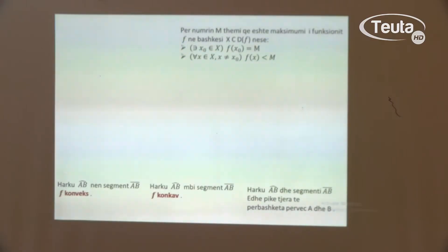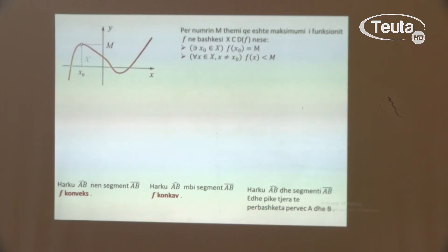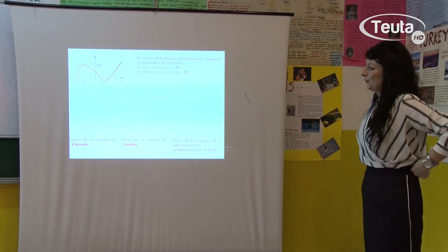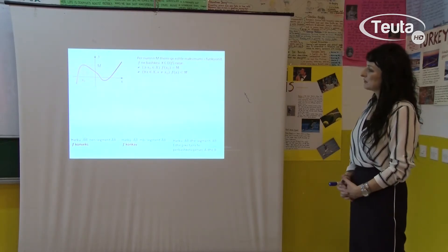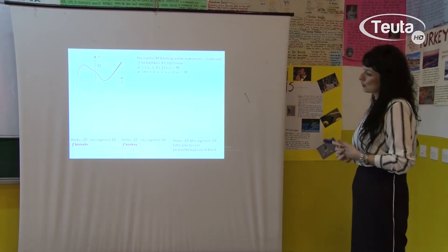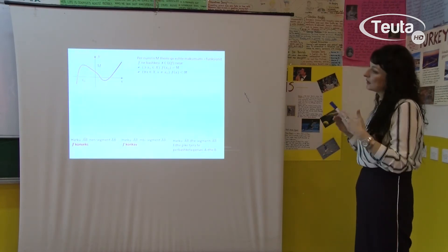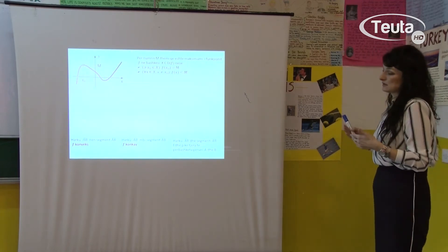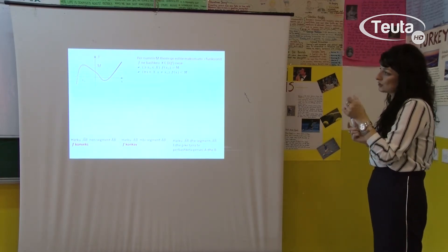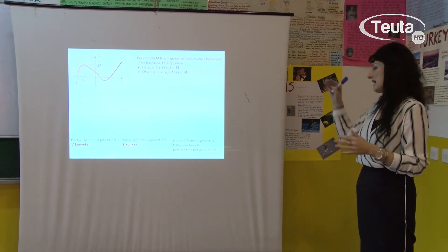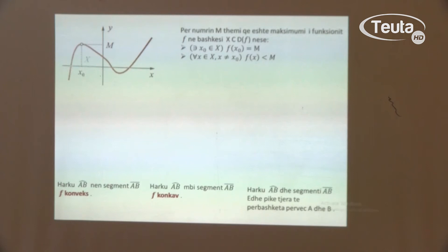Pika tjetër që do të shqyrtojmë është pika e maksimumit. Këtu kemi gjithashtu të paraqitur një grafik, dhe siç shohim, pika më e madhe për vlerën x₀ është pika maksimale në bashkësinë X të funksionit. Themi: për numrin m që është maksimumi i funksionit f në bashkësinë X, në qoftëse ekziston x₀ për të cilin arrihet m, dhe për çdo x nga bashkësia X, i ndryshëm nga x₀, të gjitha vlerat e funksionit janë më të vogla se m. Këto do ti shqyrtojmë vetëm nga grafiku; më detajisht vlerat ekstreme do ti punojmë në vitin e 4.